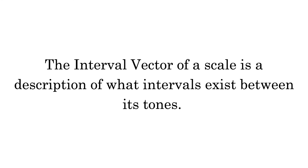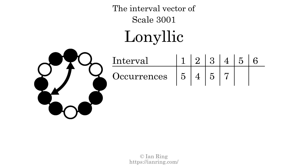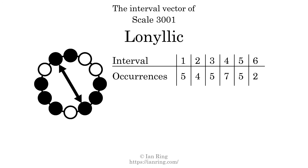The interval vector of a scale is a description of what intervals exist between its tones. There are 5 intervals of 1 semitone, 4 intervals of 2 semitones, 5 intervals of 3 semitones, 7 intervals of 4 semitones, 5 intervals of 5 semitones, and 2 intervals of 6 semitones. Each interval does not appear a unique number of times, so this is not a deep scale.